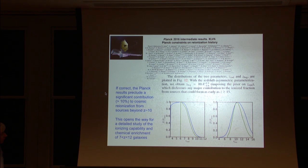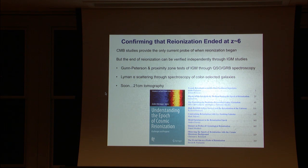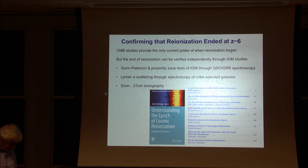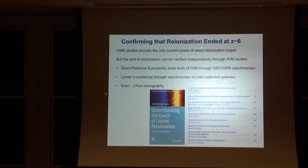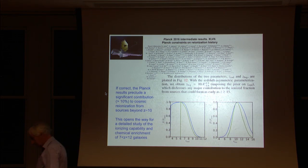Planck, if it's correct, tells us that reionization maybe began at redshifts of 10 to 12 or so. But there's rich astrophysics that tells us that reionization ended at 6. This is such an interesting field. There's now a book by Andre Messinger, Understanding the Epoch of Reionization, and there are many nice review chapters here that verify independently through studies of the intergalactic medium. The Gunn-Peterson and proximity zone tests of quasars, Lyman-alpha scattering through studies of galaxies, and soon we will have 21-centimeter tomography of the neutral gas in the intergalactic medium as well. These collectively do support the idea that reionization ended at 6.